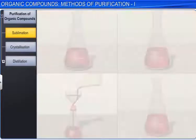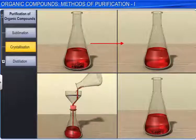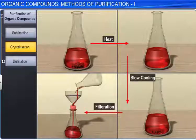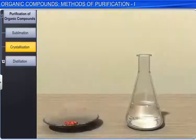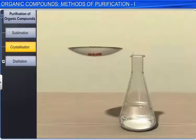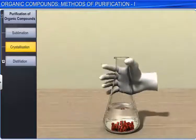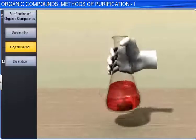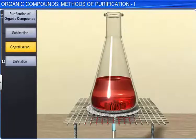The next method of purification is called crystallization. It is one of the most commonly used techniques for the purification of solid organic compounds. This technique is based on the difference in the solubilities of the compound and the impurities in a suitable solvent. In this process, the impure compound is dissolved in a solvent in which the compound to be purified is moderately soluble at room temperature and highly soluble at higher temperature. The solution is heated to get a nearly saturated solution.